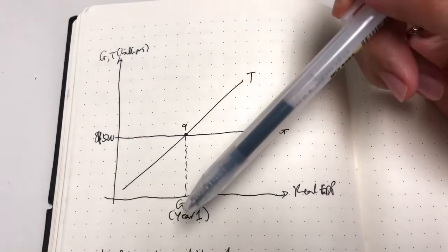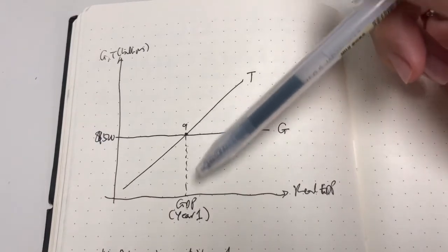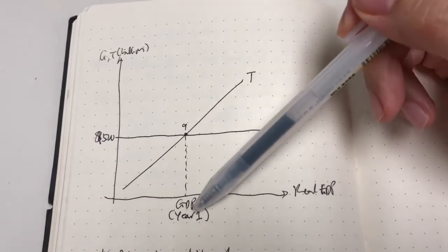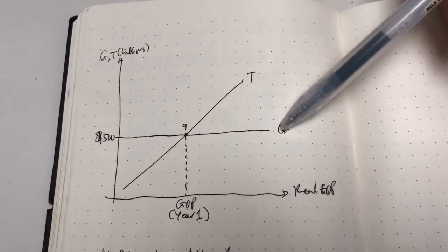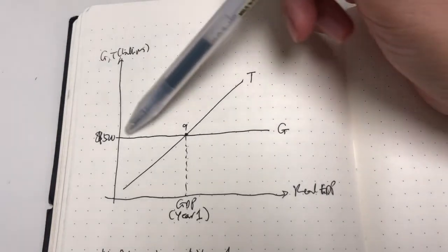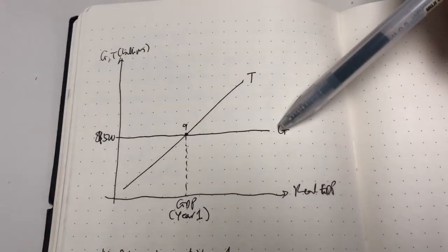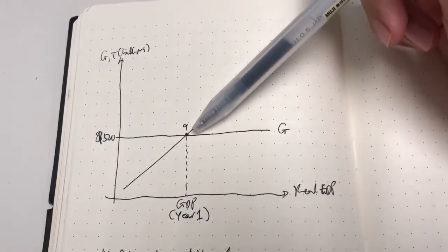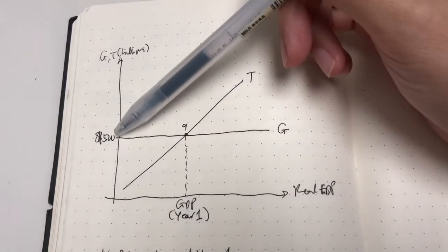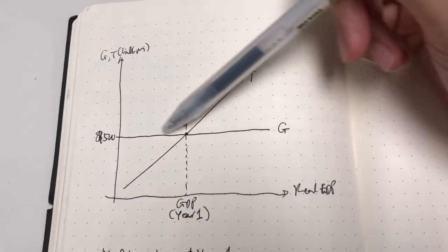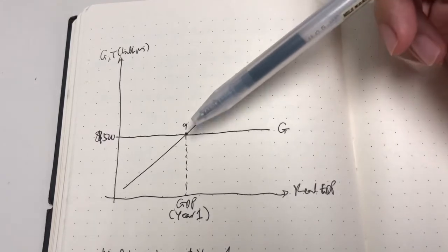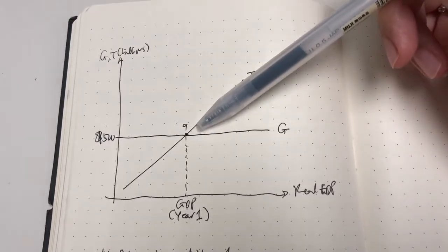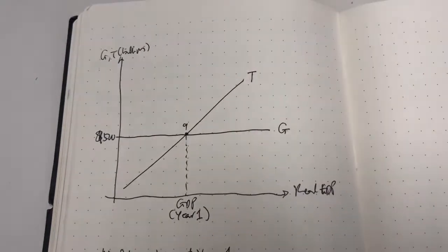Let's look at year one. At year one, full employment happens. We can see the government spending is exactly equal to the amount of taxation collected at point A, which is $500 billion. There is a balanced budget because G equals T.